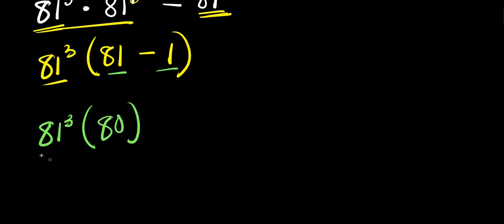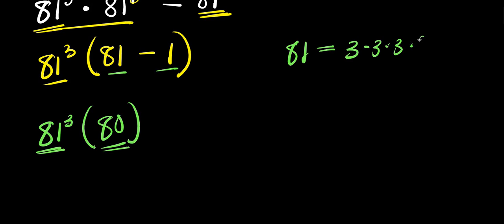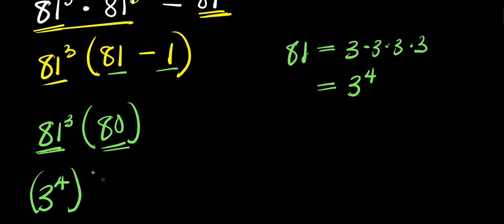So we now have 81 to the power 3 times 80. We need to find this value. Since 81 is simply 3 times 3 times 3 times 3, that means 81 equals 3 to the power 4. So we replace 81 with 3 to the power 4, giving us 3 to the power 4, cubed, times 80.